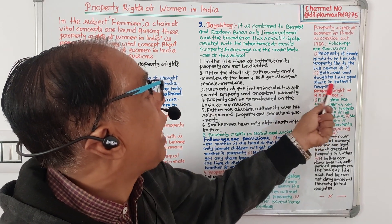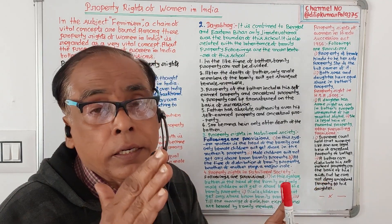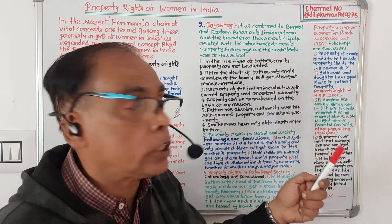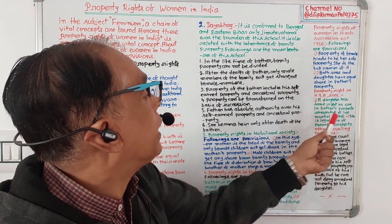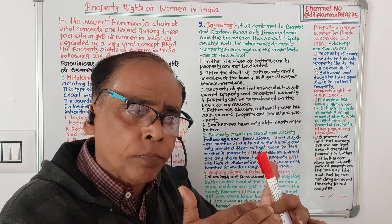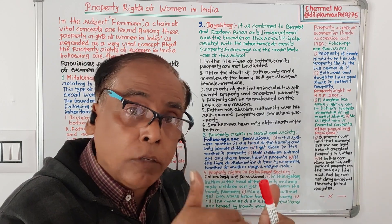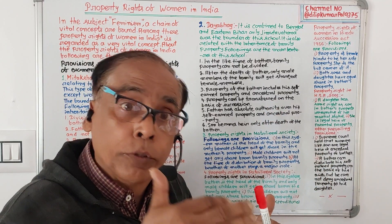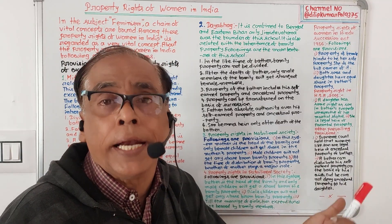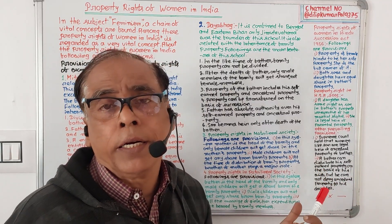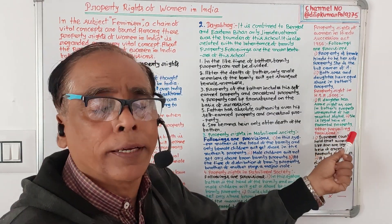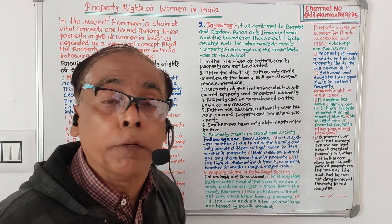Property rights in the Hindu Succession Act 2005. Number one: a daughter has the same right as a son in the father's property, irrespective of her marital status — even if the daughter is married or not, it is not important; like a son, a daughter will get equal share from the father's property. Number two: she is the legal heir of the parent's property as a coparcenary.